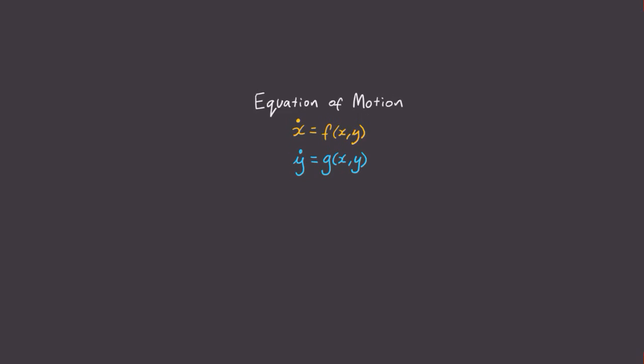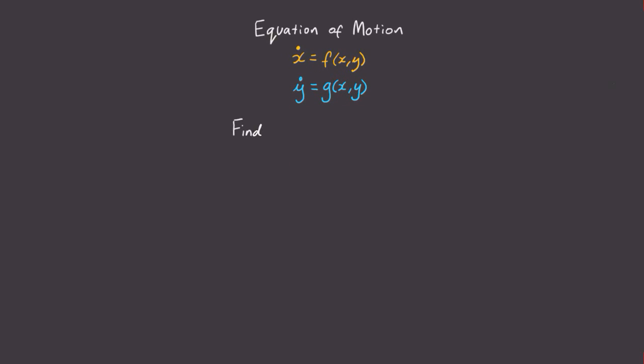Okay, so the first thing we're going to do is find the fixed points, which I'll call x star and y star, of this system of differential equations. Recall that the fixed points are points where the flow has zero velocity, in other words where x dot is equal to zero and y dot is equal to zero.